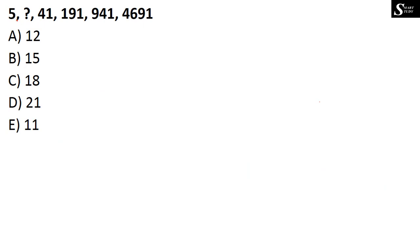The first question here is: 5, ?, 41, 191, 941, and 4691. By looking at these values, we cannot directly identify the pattern. Let's check: 41 and 191 — if you take 41 approximately as 40, then 190 or 200 is about 4 to 5 times of 41. Similarly, 191 compared with 941 is again approximately 5 times.